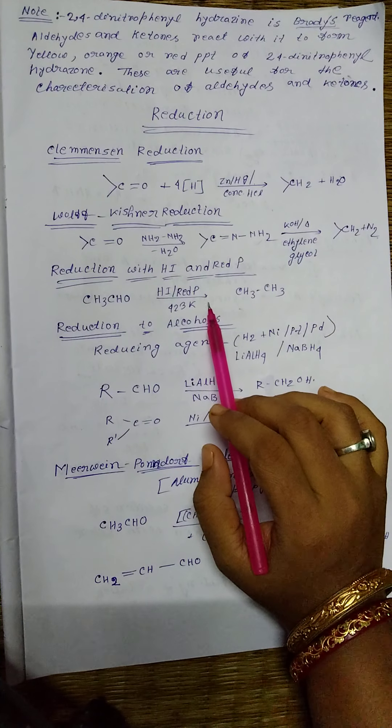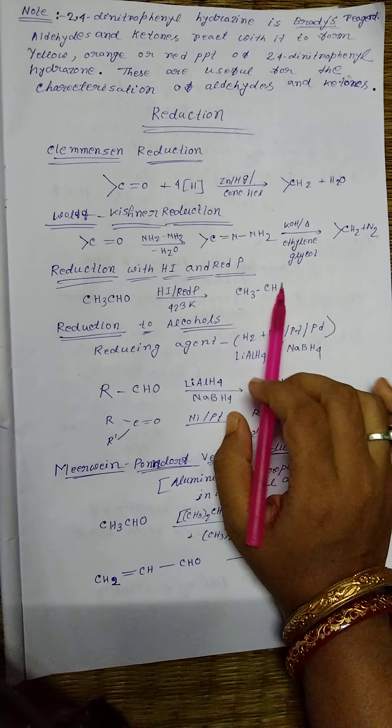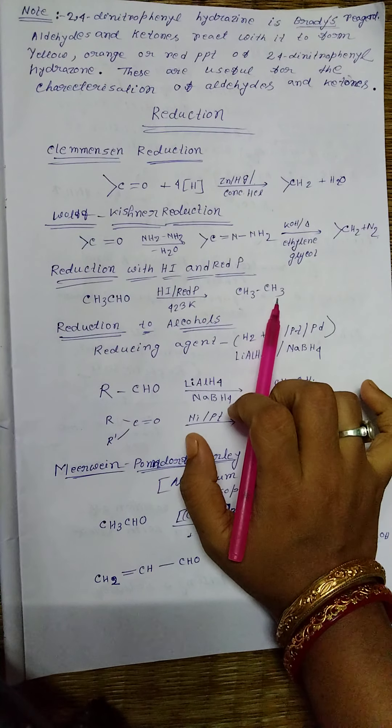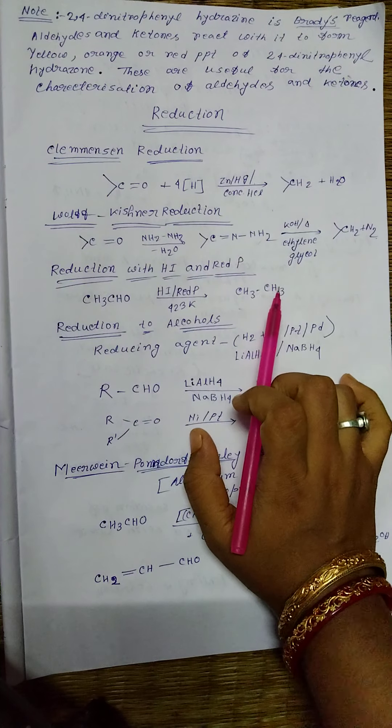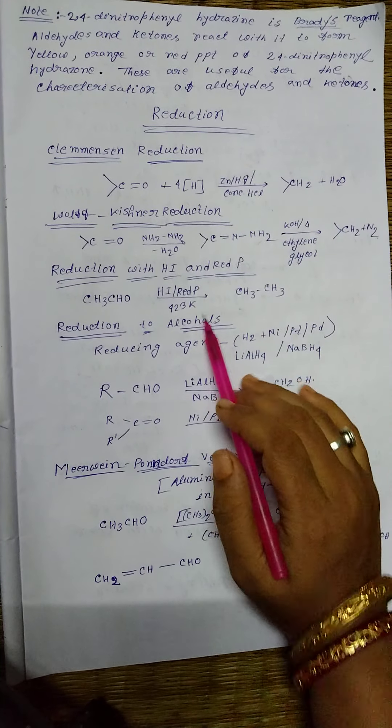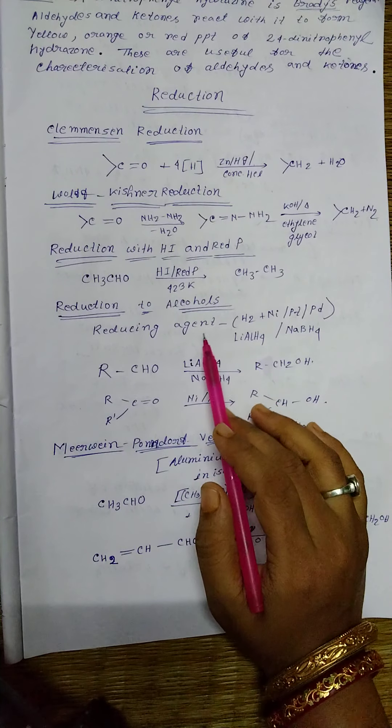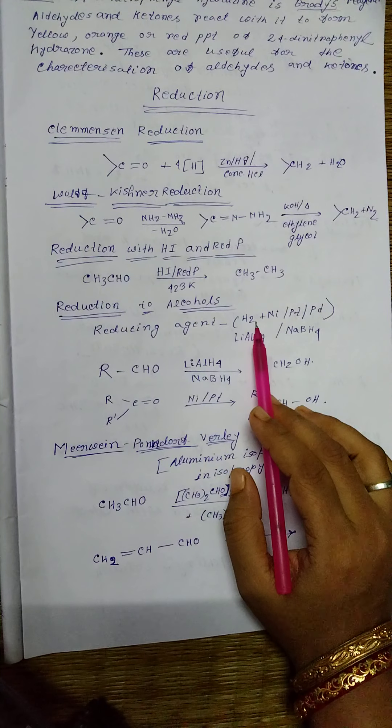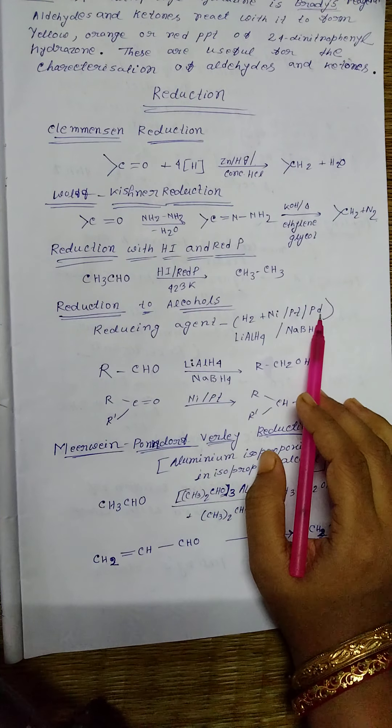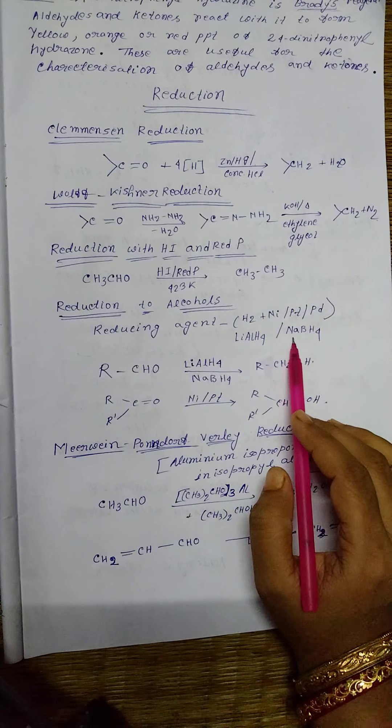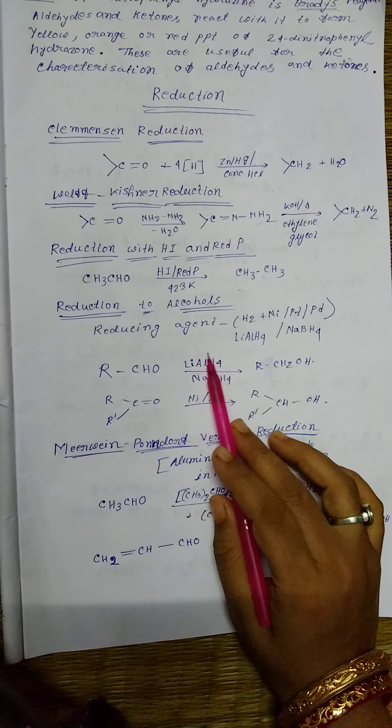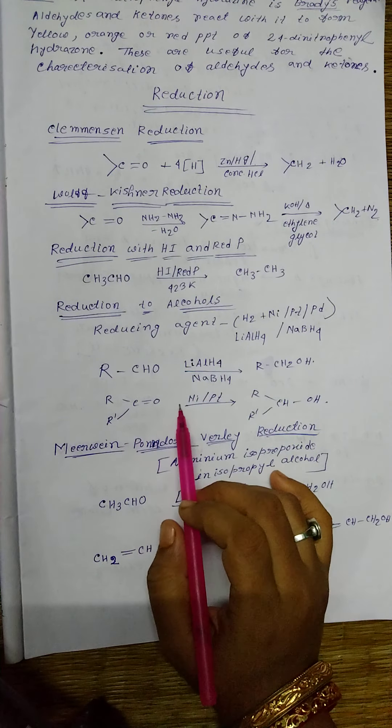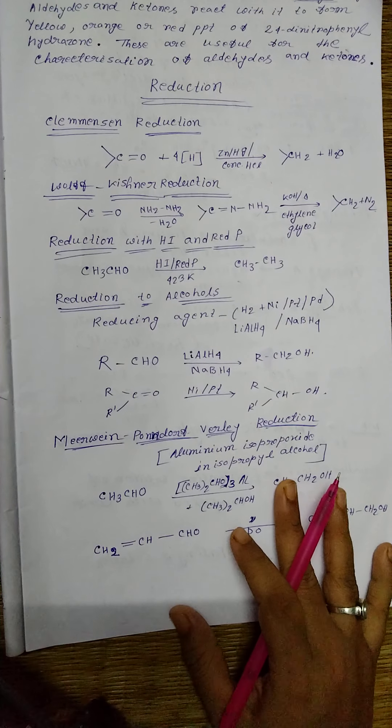Now, reduction to alcohols. Here we can use reducing agents such as hydrogen in presence of nickel, palladium, or platinum catalyst, or LiAlH4 or NaBH4. By using these reducing agents we get alcohol from aldehyde and ketone.